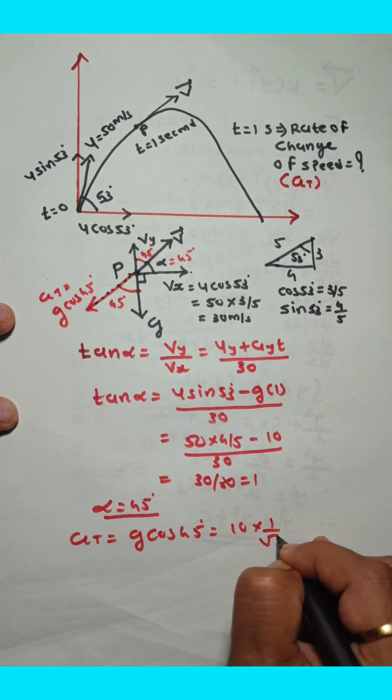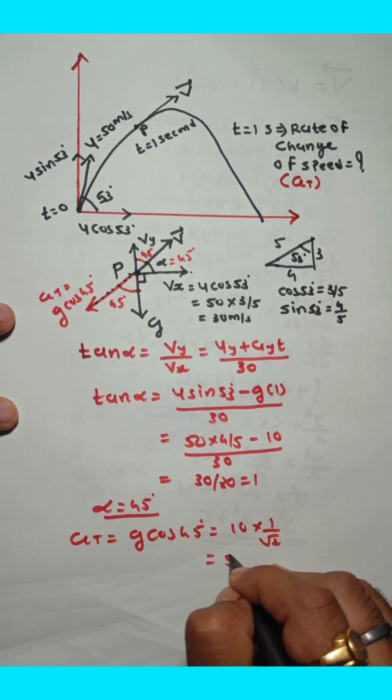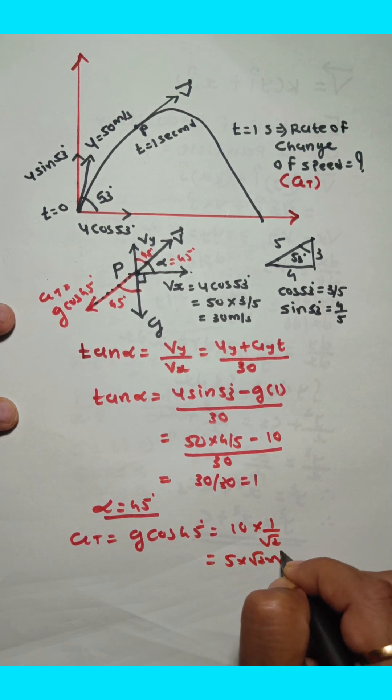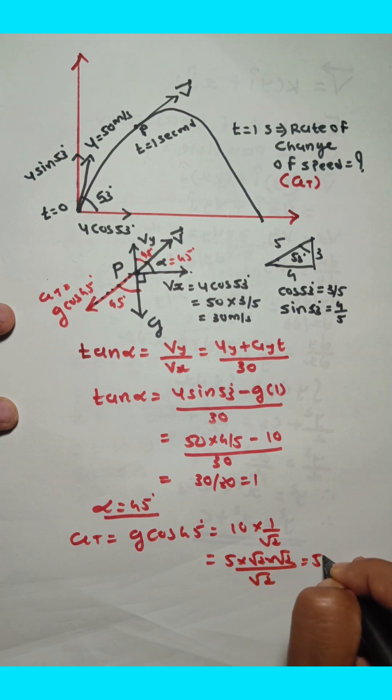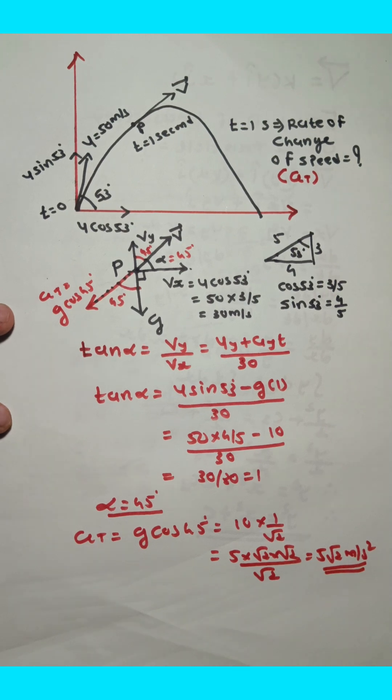This equals 10 times 1 over root 2, which simplifies to 5 times root 2 times root 2 over root 2. So the answer is 5 root 2 meters per second squared. That is the tangential acceleration or rate of change of speed. Thank you.